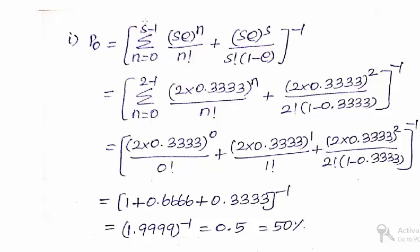Here S is 2, so S minus 1 is 2 minus 1, that is 1. So N equals 0 to 1. There will be two terms for the summation expansion.